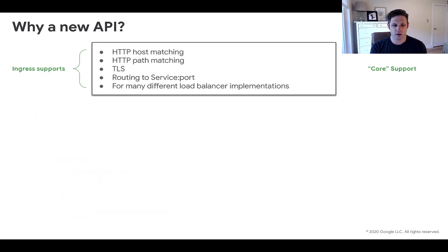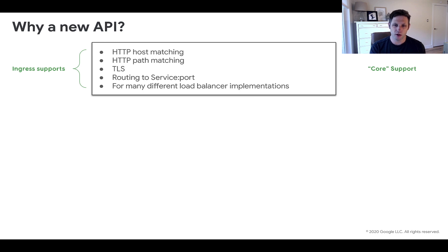So one valid question might be, why do we need a new API to do the same thing? The ingress resource supports some basic HTTP routing semantics, and this includes HTTP host and path matching, TLS termination, and routing to service backends. But in terms of flexibility, it doesn't offer a lot of ways to evolve this API to support more advanced capabilities.